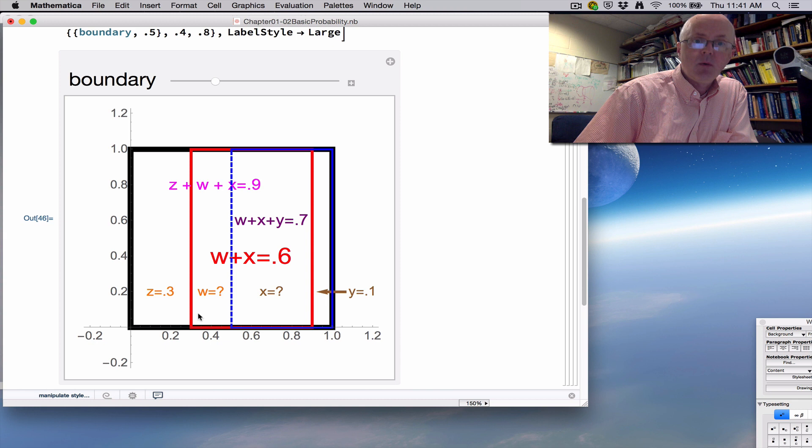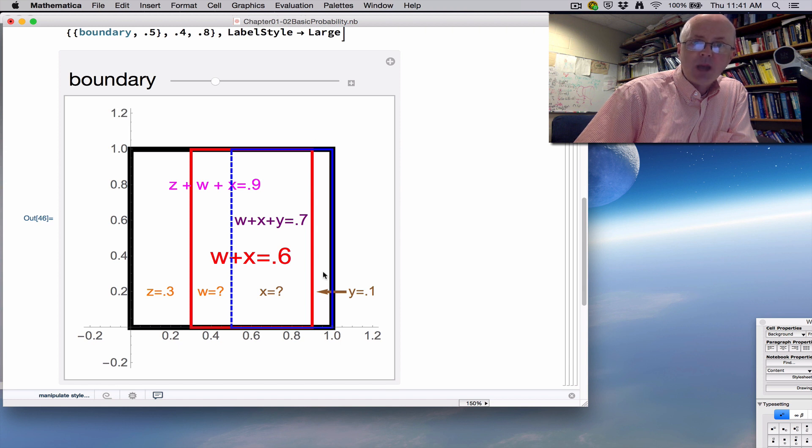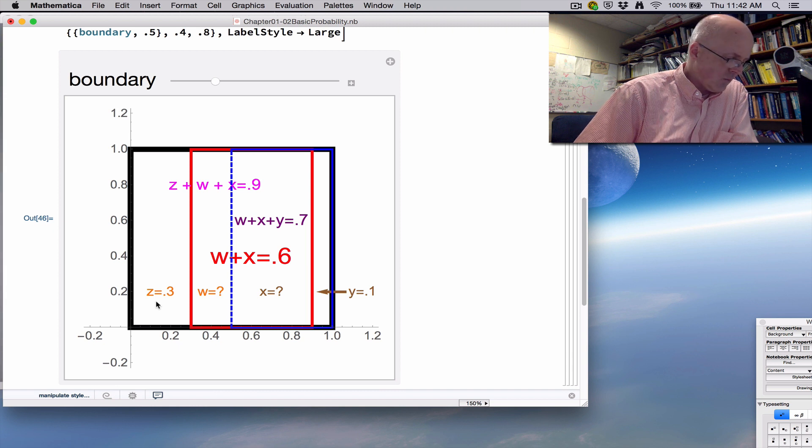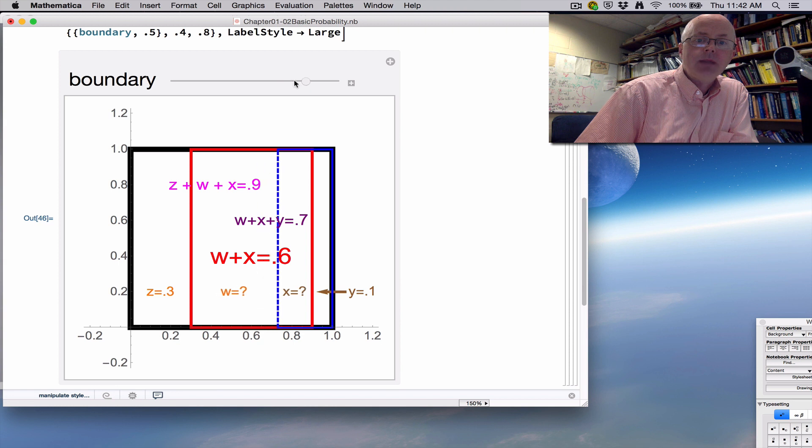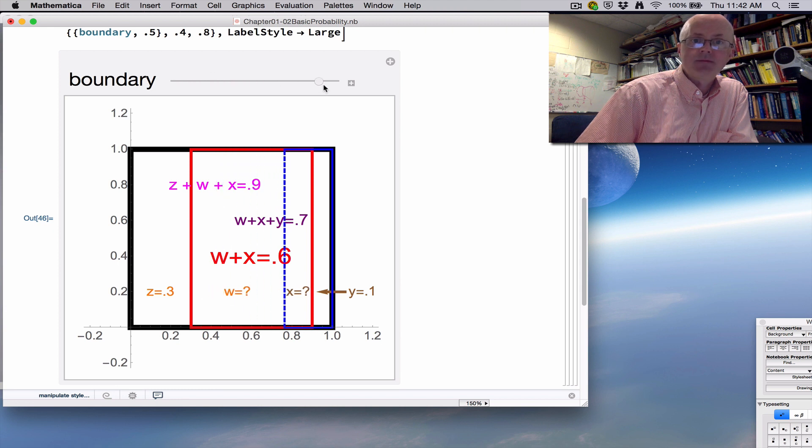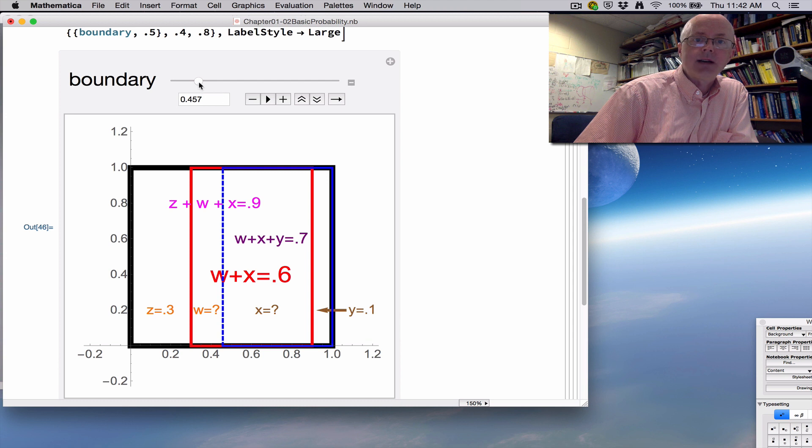W plus x plus y is 0.7. That represents A union B. What's in red or blue over here. That's 0.7. We can figure out that y over here, which is in B but not in A. This wedge here has an area of 0.1. And therefore, we can also figure out that this area is 0.3 if we like, though that's not necessary as far as solving the problem. We ultimately can figure out that what's in the red rectangle here, which represents A itself, is 0.6. W plus x is 0.6. The boundary, again, can be anything here. The values of W and X are unknown. They can be anything between 0 and 0.6, but they do have to add up to 0.6. So I made an animation like this. You can also open this up to see the value of the boundary of that dash blue line here as I move the slider. Thanks for watching.